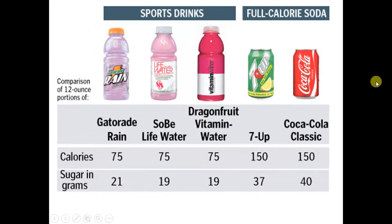Dividing the grams by 4 tells you how many teaspoons of sugar are in a product. For example, a 12-ounce portion of Coca-Cola has 10 teaspoons of sugar, which is above even the maximum that a man should consume for the entire day.